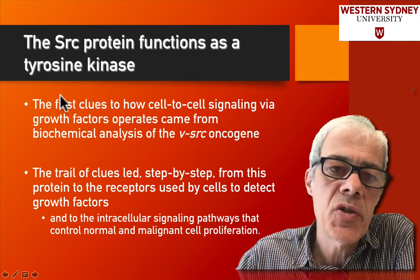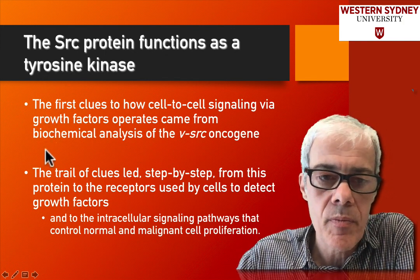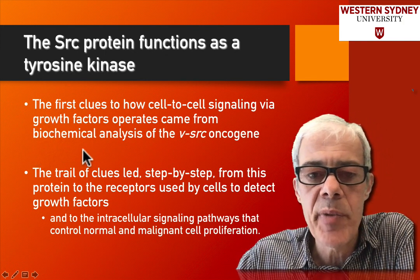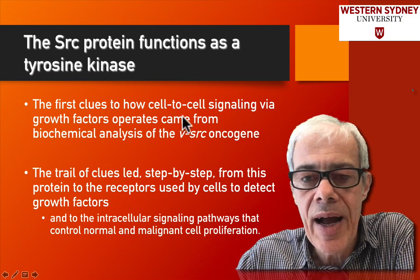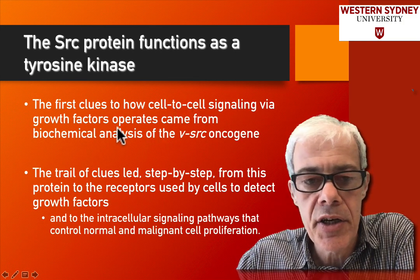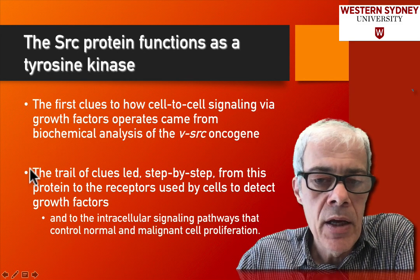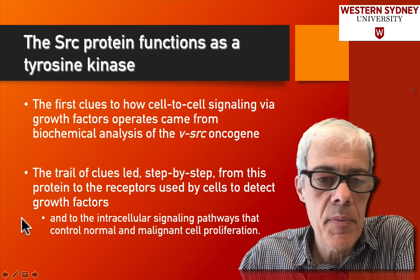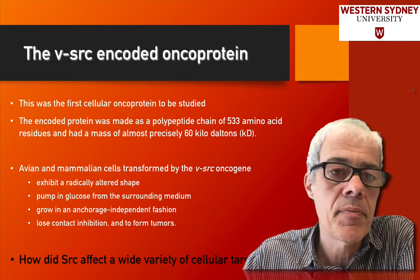The first tyrosine kinase to be identified was the Src protein. By understanding Src, it gave biologists a clue as to how these signaling pathways occur. We'll look at some of the evidence and experiments that were done on the Src protein.